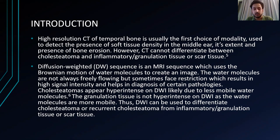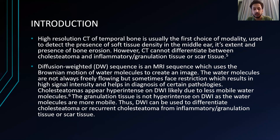DWI is an MRI sequence used for that differentiation, which uses the technique of Brownian motion to create an image. The water molecules are not always freely flowing but sometimes face restriction, which results in high signal intensity, that is diffusion restriction, and it appears hyperintense on DWI. However, granulation tissue will not appear hyperintense on DWI as water molecules are more mobile. So DWI differentiates cholesteatoma from inflammatory granulation tissue and scar tissue.